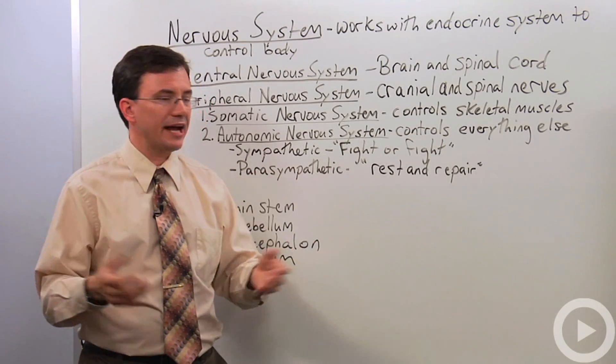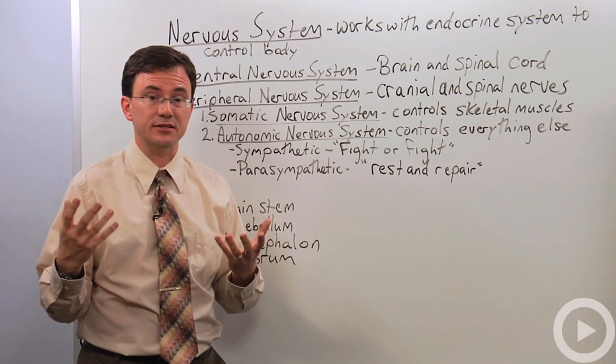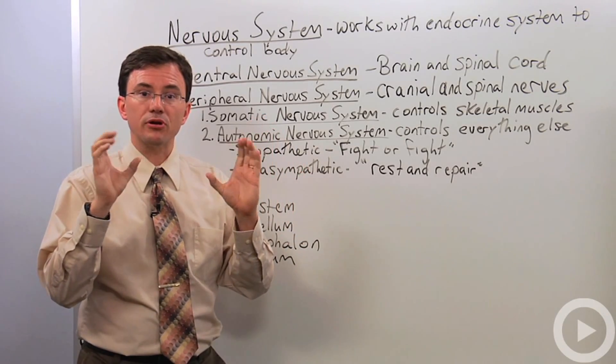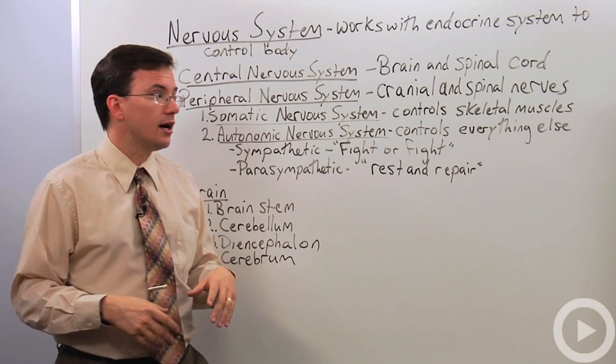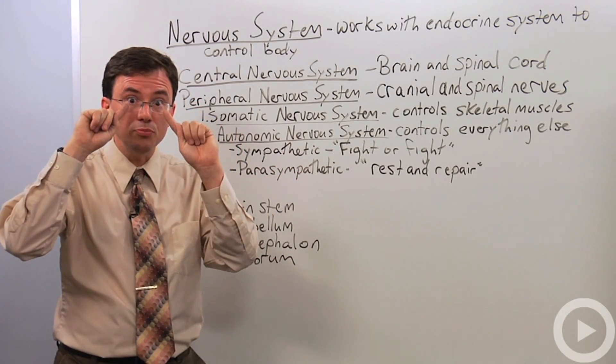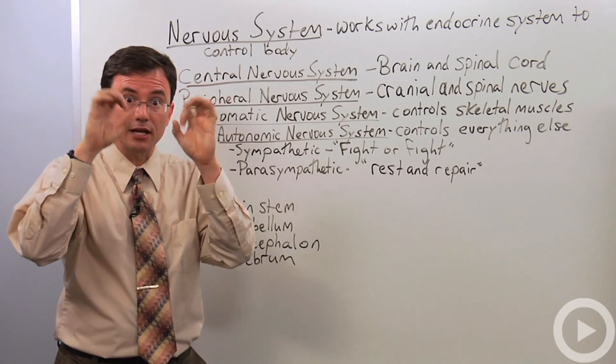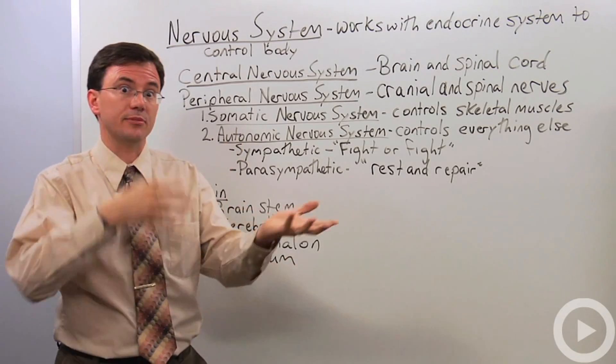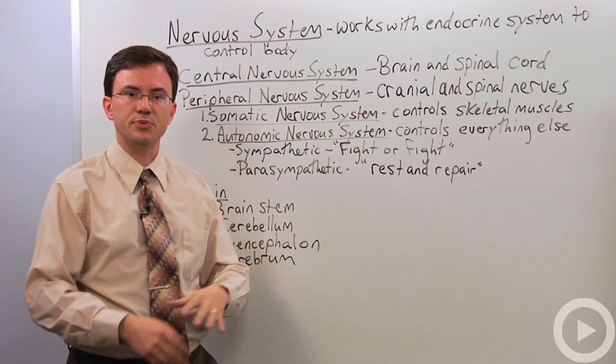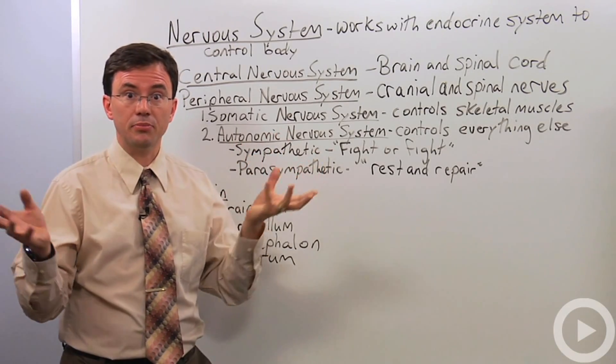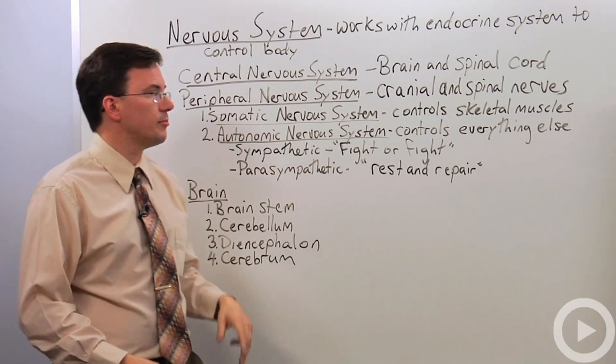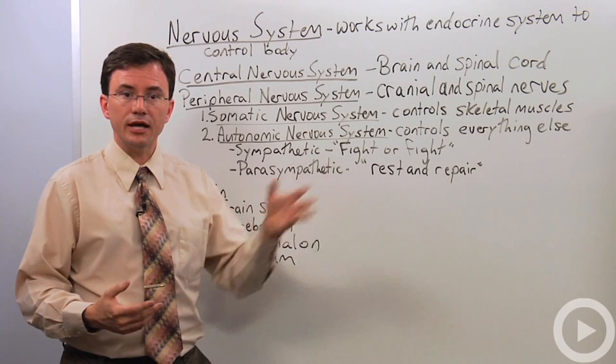But the autonomic nervous system controls everything else. Now that's a really broad category because it's really a lot of things. It's the autonomic nervous system that helps regulate how open or closed blood vessels are to different parts of your body. Your autonomic nervous system adjusts the size of the pupil, the hole in your iris that allows more or less light based on how much light you're looking at.